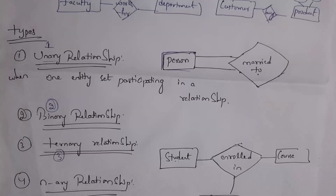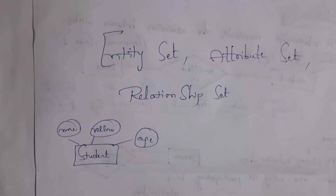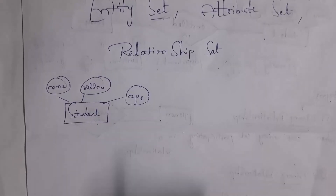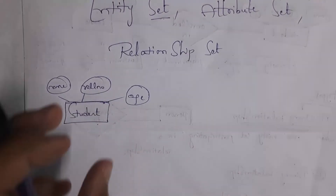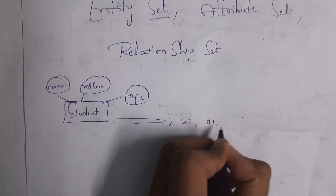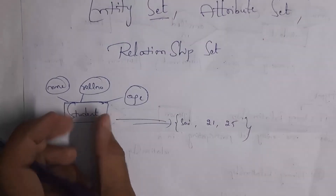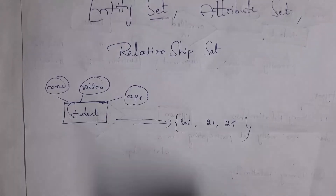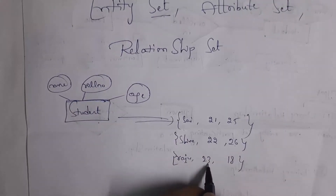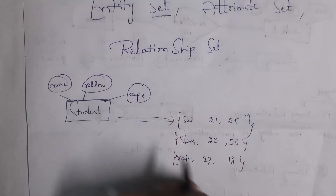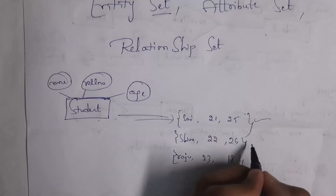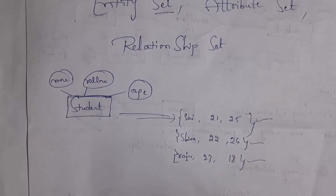Next I will explain what is entity set, attribute set and relationship set. A set is nothing but a collection of elements. Entity is nothing but a table name represented using a rectangle. For example, this is a student entity. If this entity contains only a single record — for example, name Sai, roll number 21 and age 25 — then we call it an entity. But if this entity contains multiple records, like Shiva roll number 22 age 26, Raju roll number 23 age 18 — then we call it an entity set. Entity set is nothing but a collection of entities.